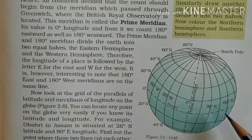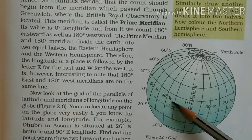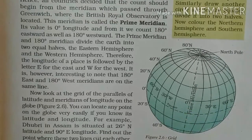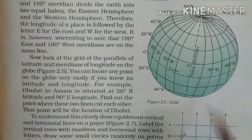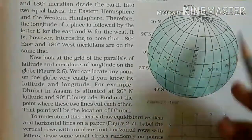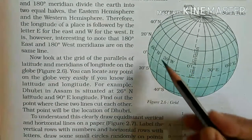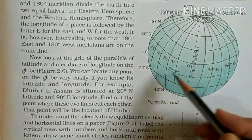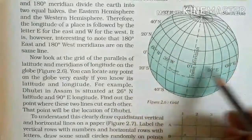In longitudes, you can see E for East and W for West. North was N and West was W. 180 degrees is East Meridian and 180 degrees is West Meridian. Here you can see the grids which show parallels of latitudes and meridians of longitudes.